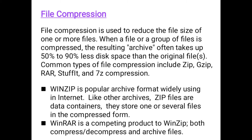Next is file compression. File compression is used to reduce the file size of one or more files. When a file or group of files is compressed, the resulting archive often takes up 50% to 90% less disk space than the original files. Common types of file compression include ZIP, GZIP, RAR, StuffIt, and 7z. WinZip is a popular archive format widely used on the internet — like other archives, ZIP files are data containers storing one or several files in compressed form. WinRAR is a competing product of WinZip; both compress, decompress, and archive files.